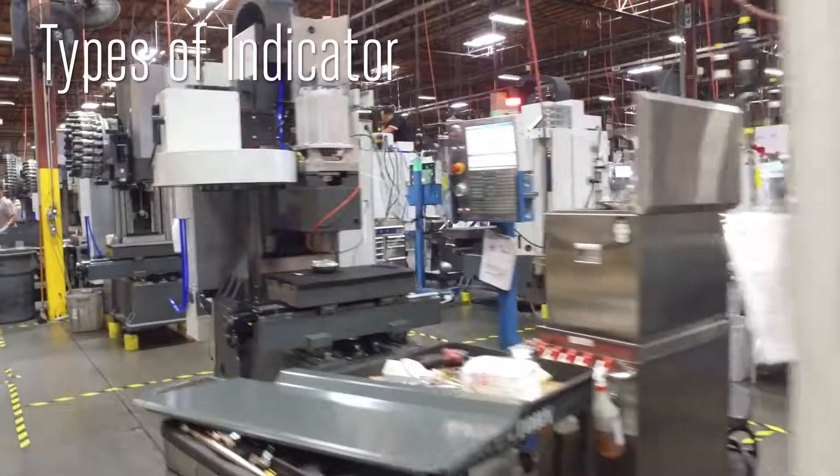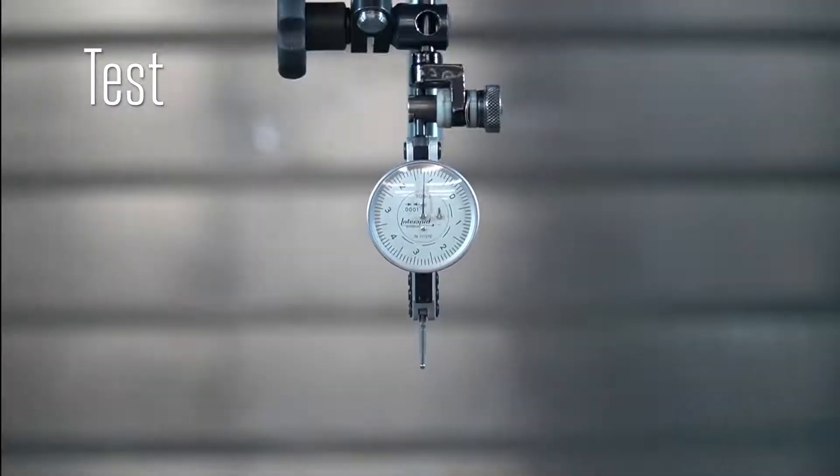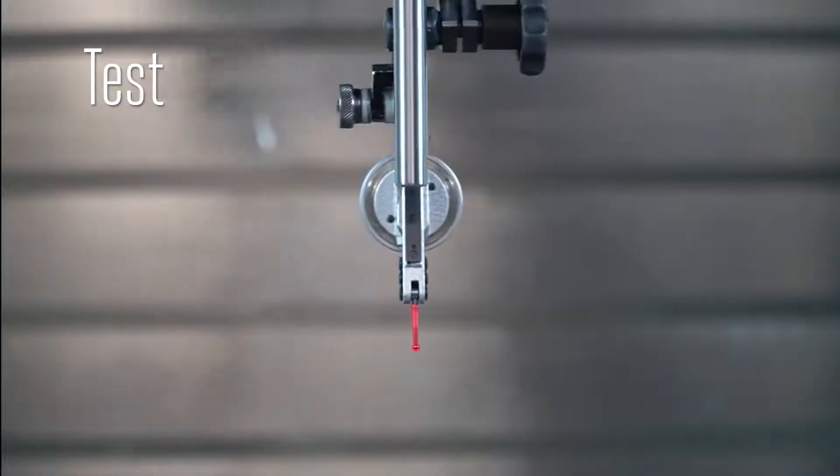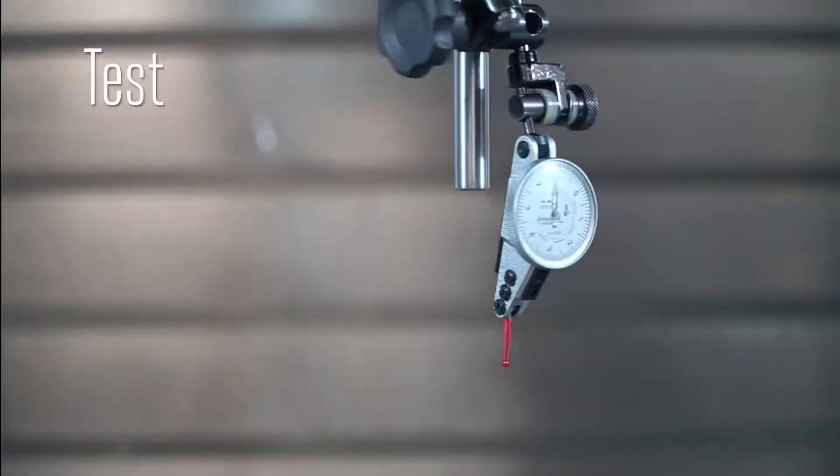Here at the Haas factory, we use two types of indicators, test indicators and drop indicators. The test indicator, often called a dial indicator, uses this lever-style arm, called a stylus, to convert very small lateral movements into a rotary reading on the dial.